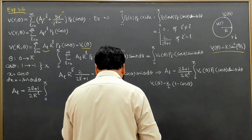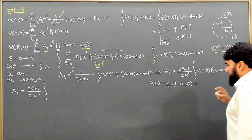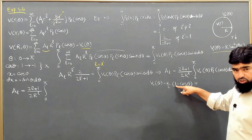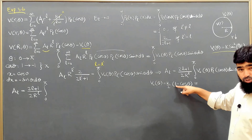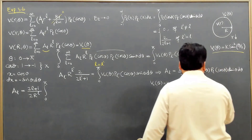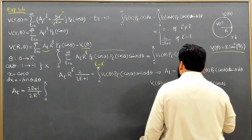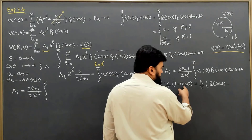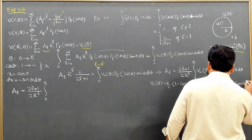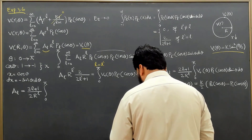Now, looking at this expression, the constant 1 is basically P₀(cos θ), and the term −cos θ equals −P₁(cos θ). So we can write V₀(θ) = (K/2) P₀(cos θ) − (K/2) P₁(cos θ). We have just converted the potential into Legendre polynomials.